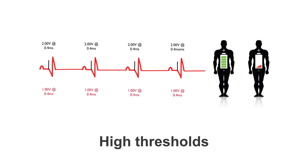Quite often by making that small change, we can go back and look at our values again. In this patient, their threshold has returned to a nice 1 volt at 0.4 milliseconds. This enables us to put the output pulse at 2 volts at 0.4 milliseconds, and still maintain safe function of the pacemaker without the additional drain on the battery. 2 volts at 0.4 milliseconds is a very normal output pulse for a pacemaker, so this person will have good longevity from their device.